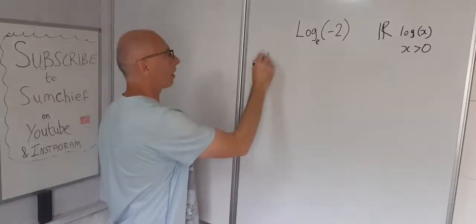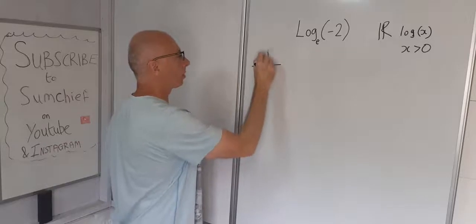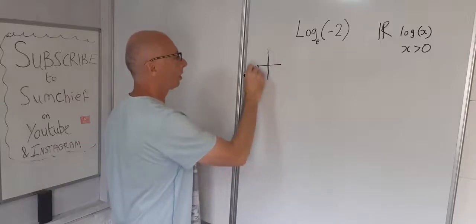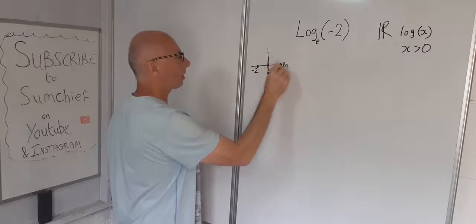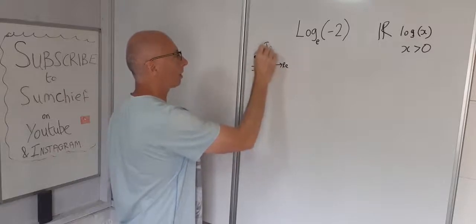So let's draw this on the graph. So minus 2, that's going to be here. That's our real axis and that's our imaginary axis.